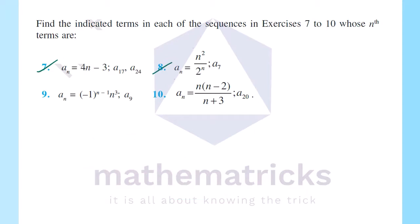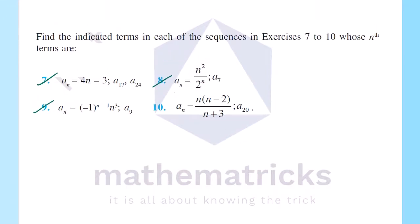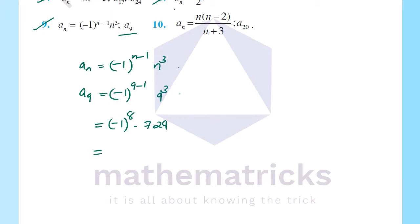Next, the 9th question: aₙ = (-1)^(n-1) × n³. We need to find a₉. Therefore, a₉ = (-1)^(9-1) × 9³ = (-1)^8 × 729 = 1 × 729. The answer is 729.